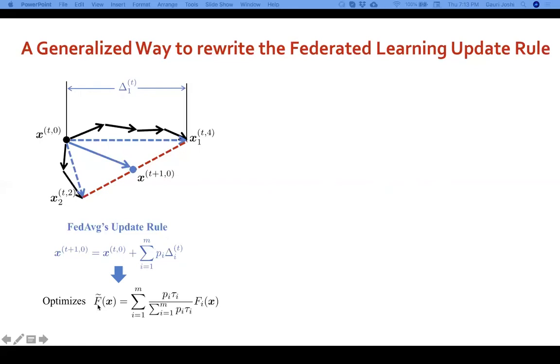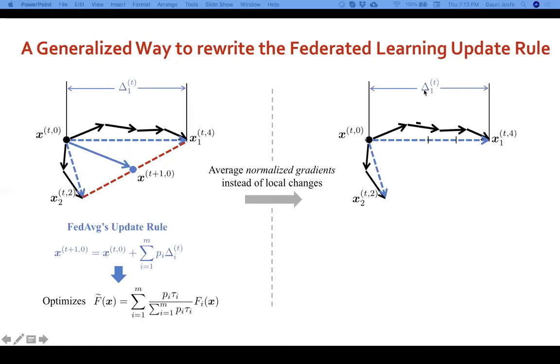Now, this ends up optimizing the mismatched objective f tilde. So in a rewritten version of this update rule, we consider that instead of sending the local progress delta_i, each client sends a normalized gradient. Instead of delta_i, the ith client normalizes delta_i by the number of local updates that it performs. So it finds delta_i divided by tau_i, where tau_i is the number of local updates, and then sends this value to the central server. Instead of these blue arrows, the two clients send the green arrows to the central server, which can then aggregate them to update the global model. This is the generalized update rule shown in green over here.